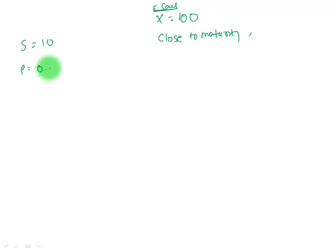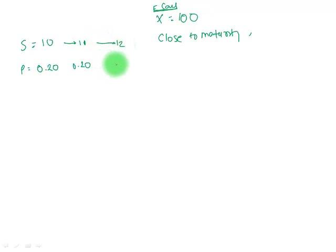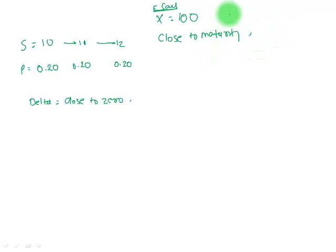The option would trade at a very small premium, say 0.20 — negligible — because it's almost impossible that a spot price of 10 would turn in the money. If spot goes from 10 to 11, there's no real impact on price; it stays at 0.20. From 11 to 12, it still stays at 0.20. So as the underlying asset price is changing, the value of the option is not changing. This is where Delta is close to 0 — when the option is deep out of the money and close to maturity.